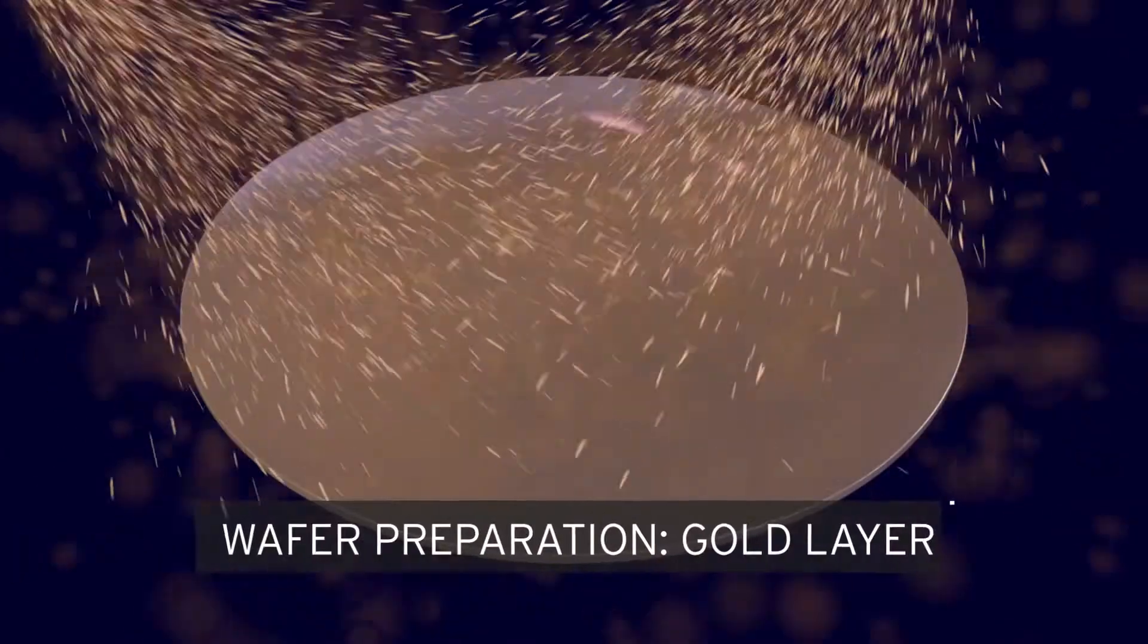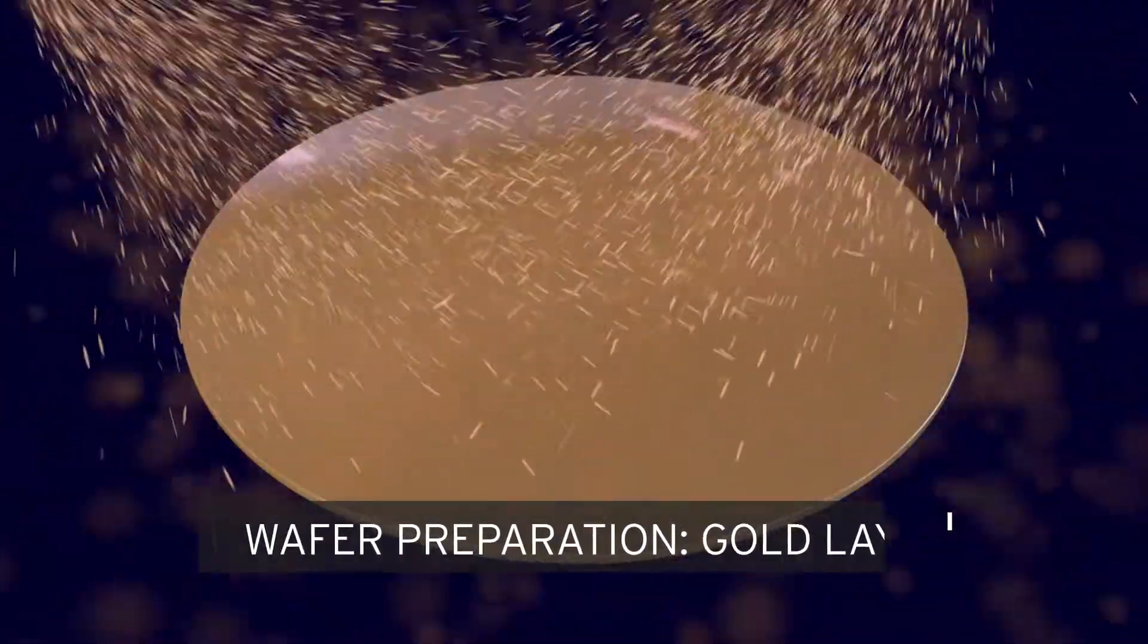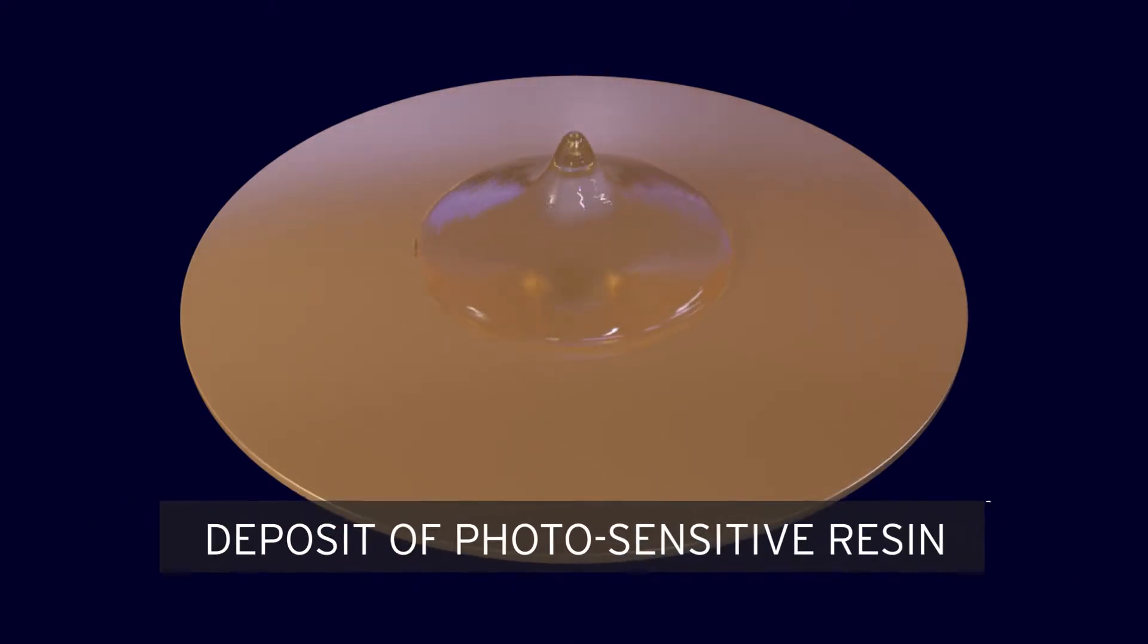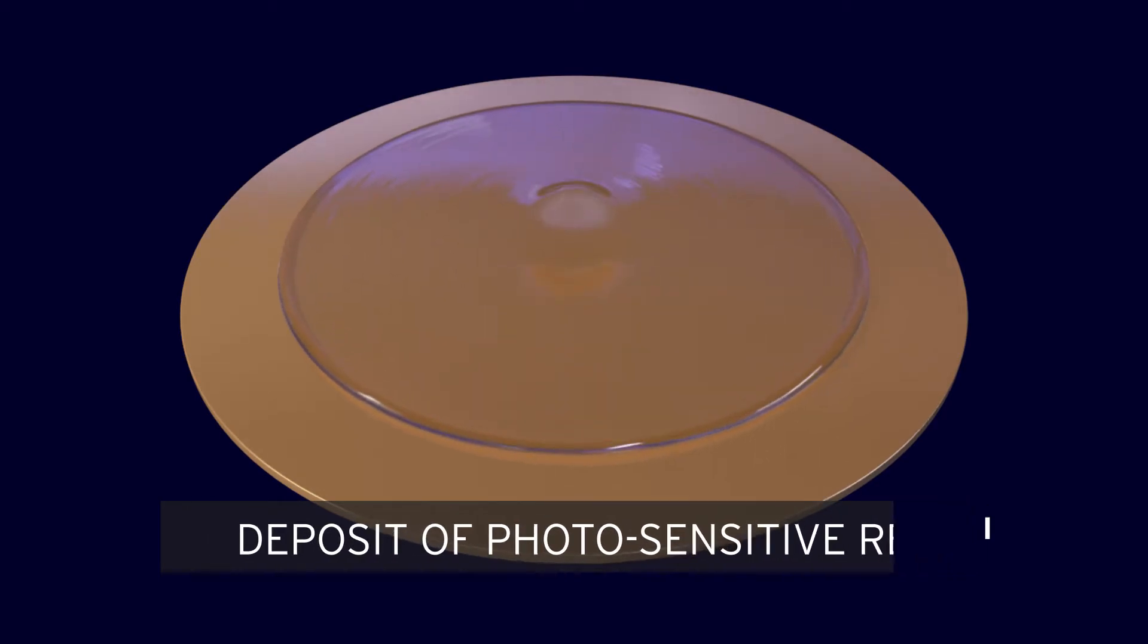And so begins the preparation of the silicon medium, otherwise known as the wafer, which is then covered by a thin layer of gold, followed by a layer of photosensitive resin. The thickness of the photosensitive layer depends on the thickness of the part to be manufactured.